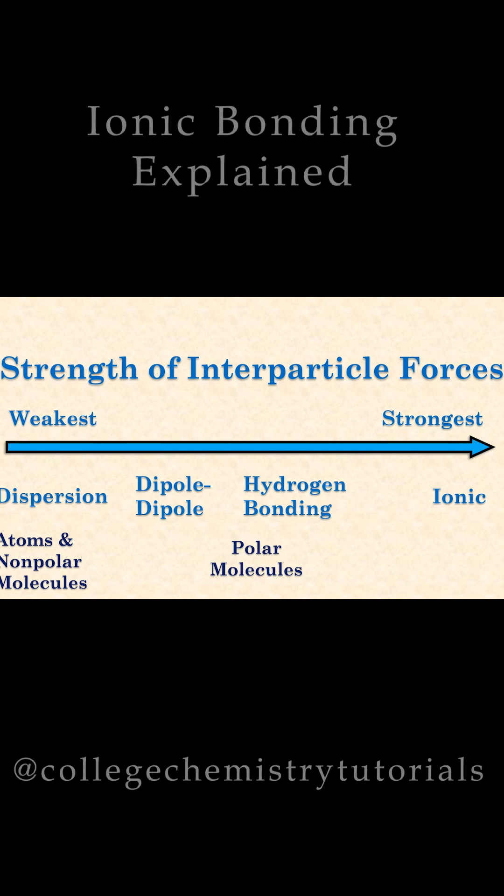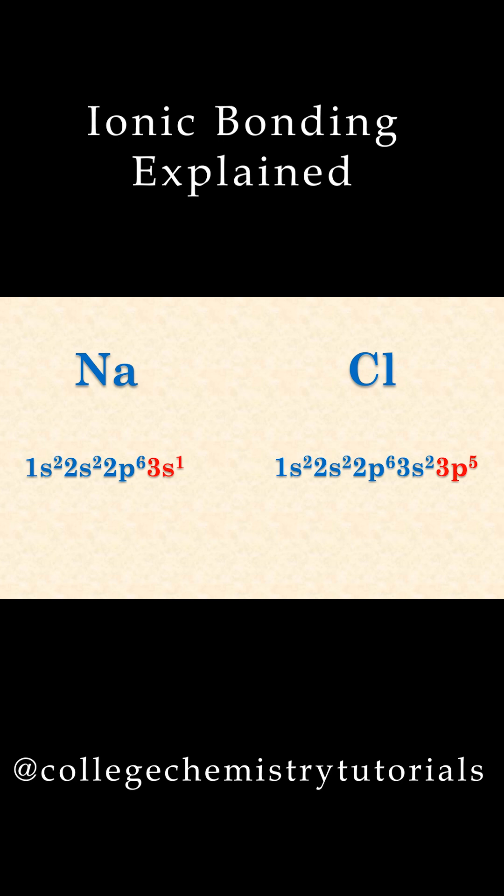Ionic bonding is bonding between charged particles called ions. I'll use the simple example of sodium and chlorine, with their respective electron configurations shown here.